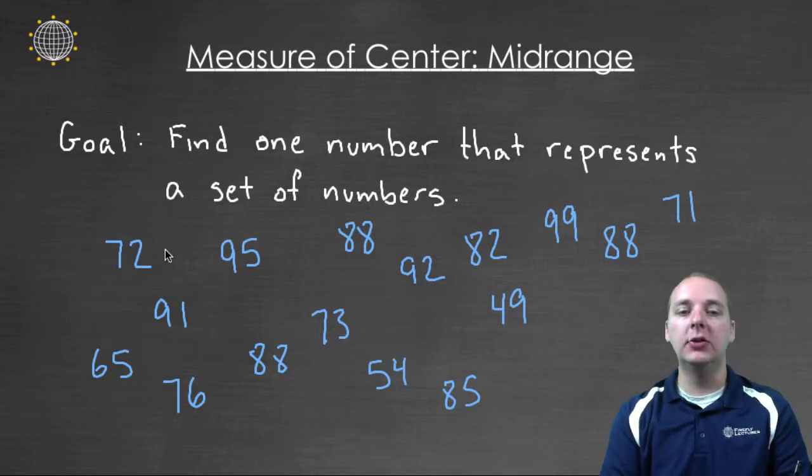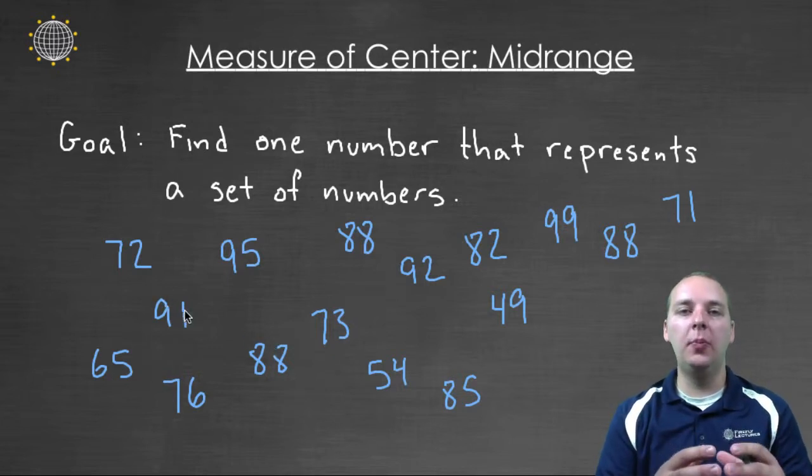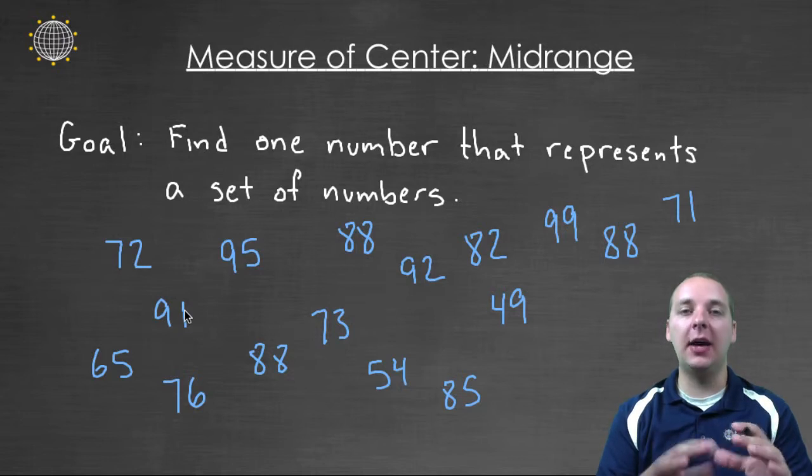We have students that scored very well like a ninety-nine and a ninety-five. We have students that did not do so well. They had a sixty-five and a seventy-two, et cetera. So how do I get one number that best typifies how the class did as a whole?